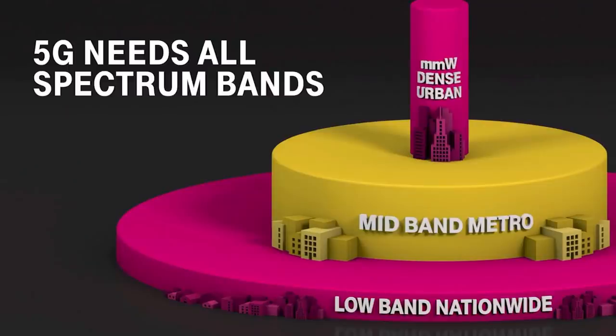Firstly, low-band covers broad geographies and penetrates buildings very well. Secondly, populous areas use mid-band. And thirdly, when it becomes very dense, high-band — or what is known as millimeter wave, also abbreviated as mmWave — covers areas such as inside stadiums and at event locations. So now that we understand the different layers of spectrum, what can 5G spectrum and performance do for you?